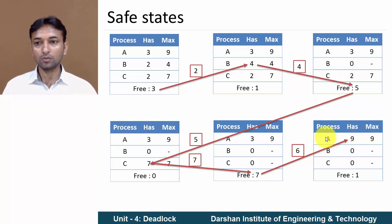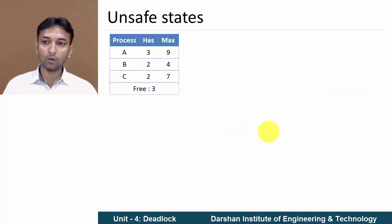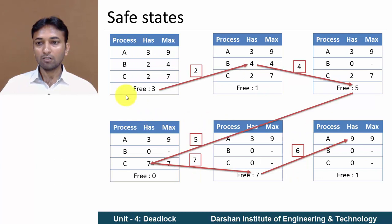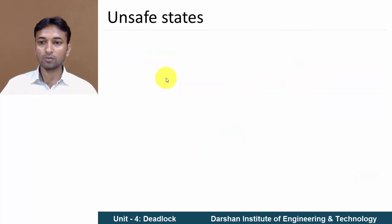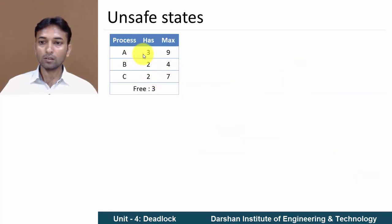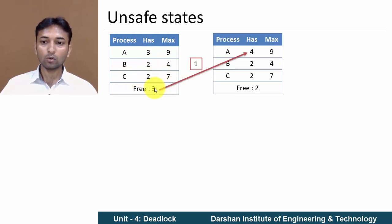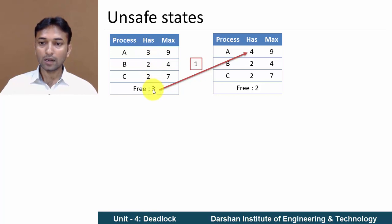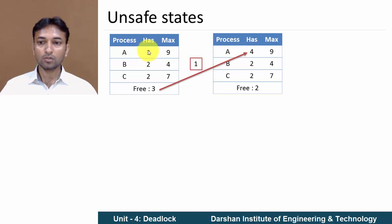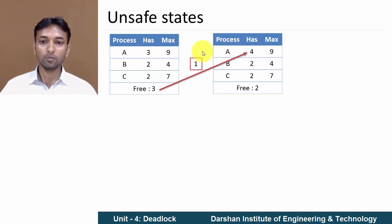Now we will see how this scenario becomes an unsafe state. In this modified example the process configurations remain A(3,9), B(2,4), C(2,7), but one additional resource is allocated to process A. So resources held by A become 4 (3+1=4), and now only 2 resources are free.